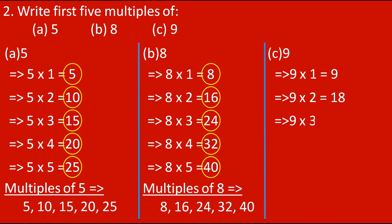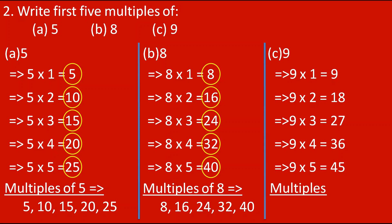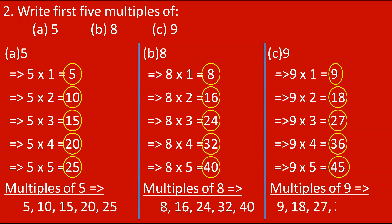Next is 9. Let's write 9's table up to 5: 9 threes are 27, 9 fours are 36, 9 fives are 45. So the first 5 multiples of 9 are 9, 18, 27, 36 and 45.